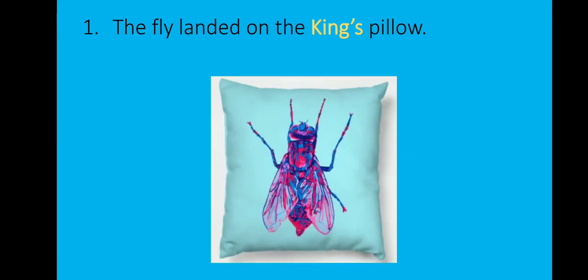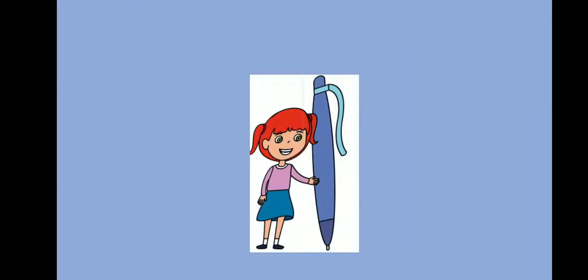Children, observe these examples. Highlighted verse also. The fly landed on the king's pillow. Carefully observe the highlighted verse. The monkey saw the king's sword near the bed. Another example: This is Rani's pen. Children, what do you understand? These highlighted words — some punctuation mark you are observing.